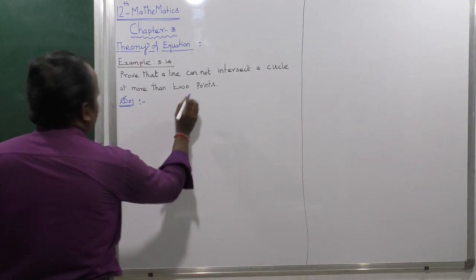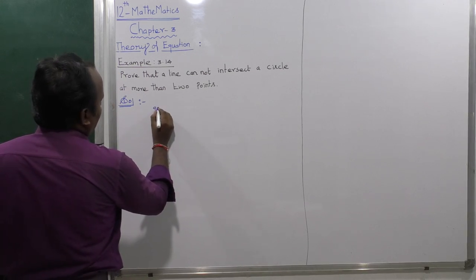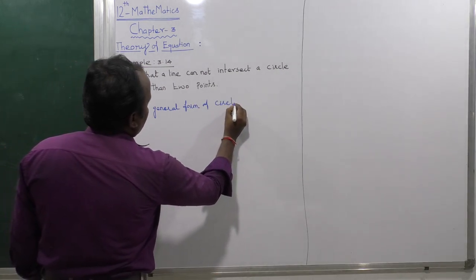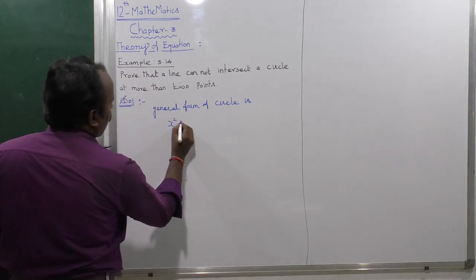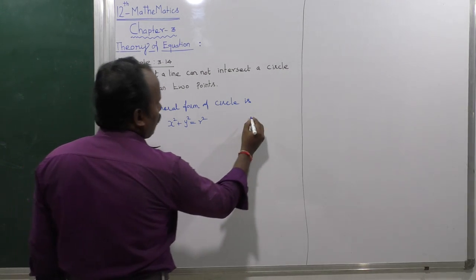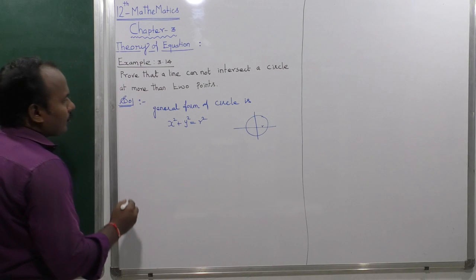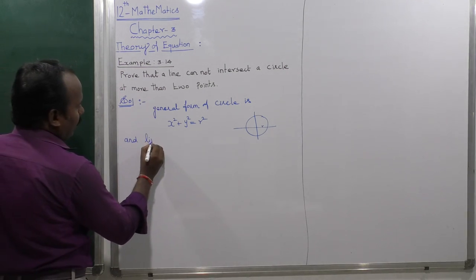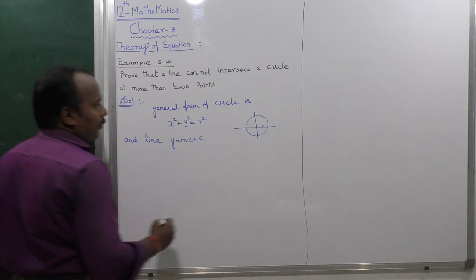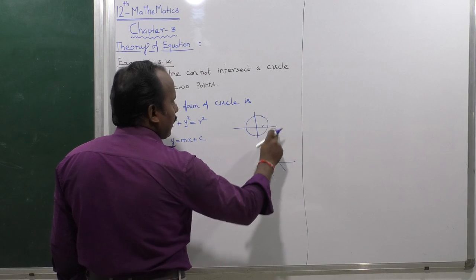First, the general form of a circle: x squared plus y squared equals r squared, where r is the radius and the center is (0, 0). Next, the general form of a line: y equals mx plus c. That is the general form of the line.